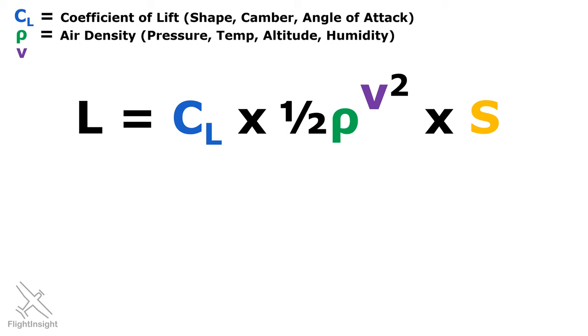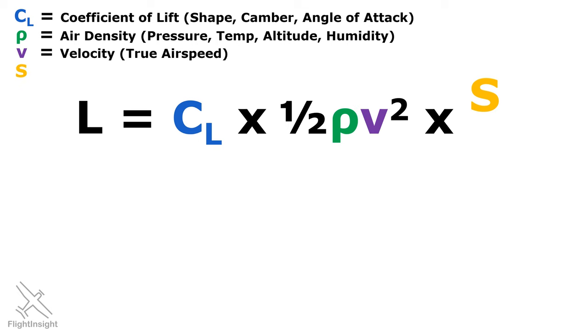The third term V is velocity, the true airspeed the aircraft is traveling. The final term is the wing surface area.